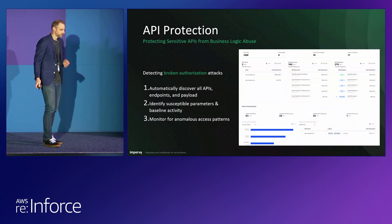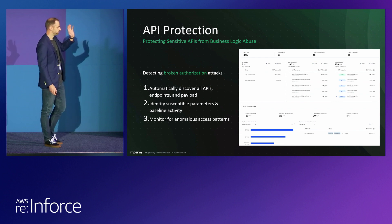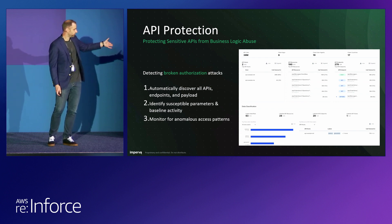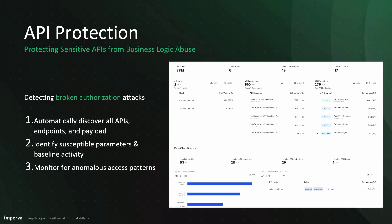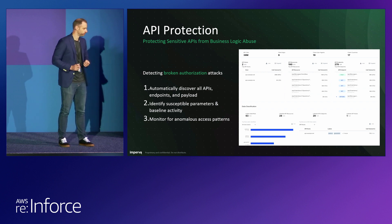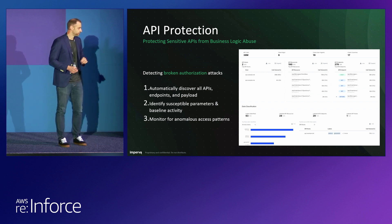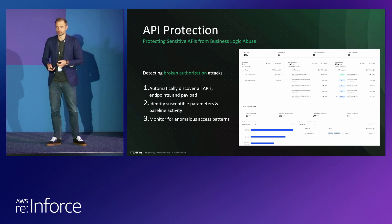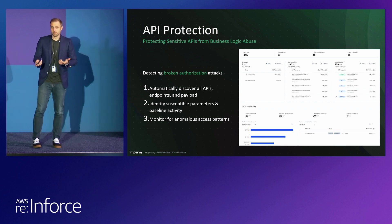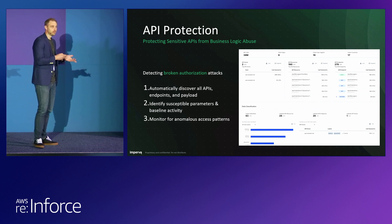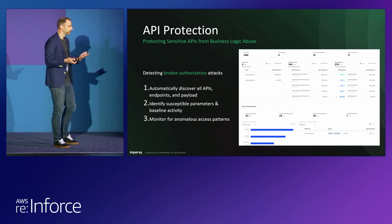From the API protection side, we look at business logic abuse in a couple of different ways. First, we discover all APIs, endpoints, and payloads, then identify the susceptible parameters. For BOLA abuse, the susceptible parameter is the ID field — the primary key. It's not something you'd normally think of as susceptible, but it's the key used to look up all those different resources. After baselining that activity, you monitor for anomalous access patterns, which looks a lot like scraping attacks — many of the same algorithms and methods apply.